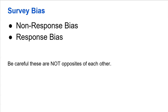Now let's talk about survey bias. Remember, survey bias happens after you have your sample. You might have the best, most random sample ever chosen in the history of statistics, but you do something wrong after that — which occurs during your survey. We have two forms: non-response bias and response bias. Most kids naturally think they're opposites of each other, but they're actually not opposites at all. Please make sure you pay attention.